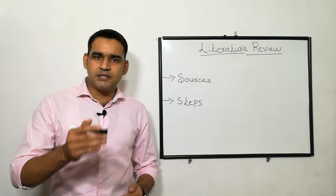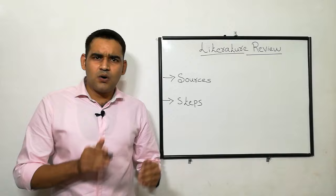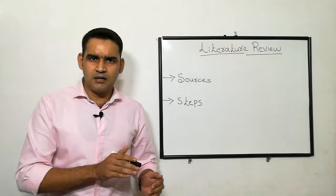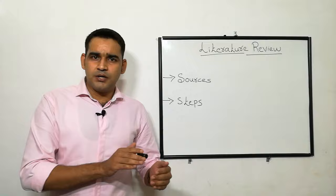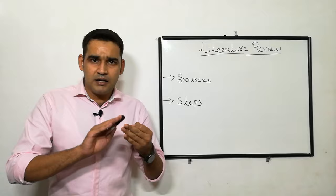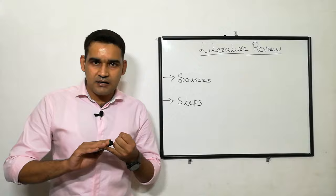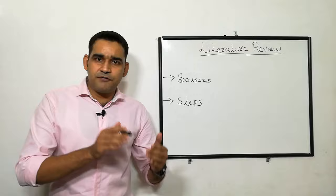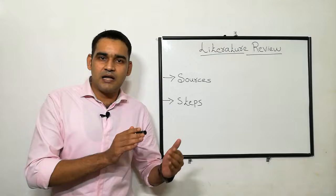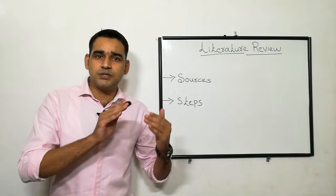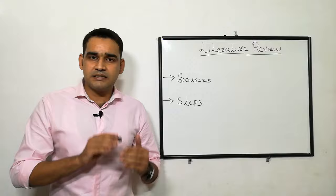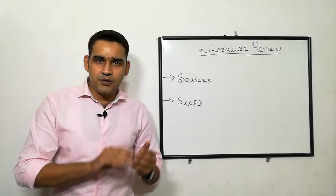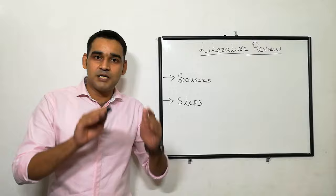The next step is writing the literature. It depends upon the policies of institutions and universities, but the common format includes an introduction, a body, and a conclusion. In the introduction, you introduce the topic and write the definition. In the body part, you write the specific objectives, the purpose, and any relevant theories. In the conclusion, you write the main contributions, the most significant findings, and conclude the literature review.